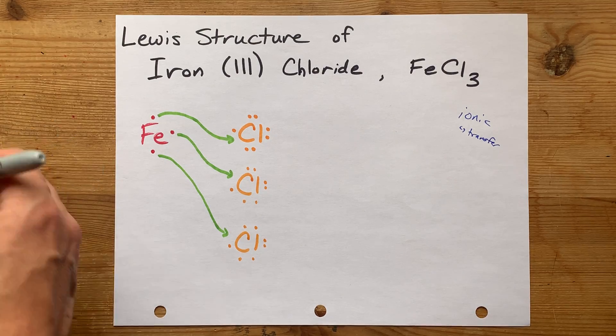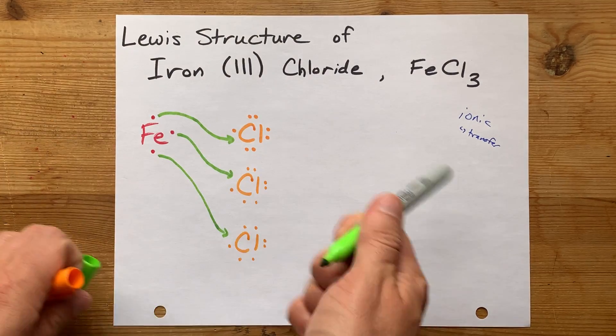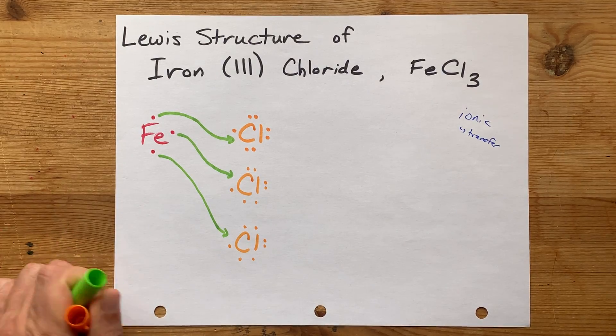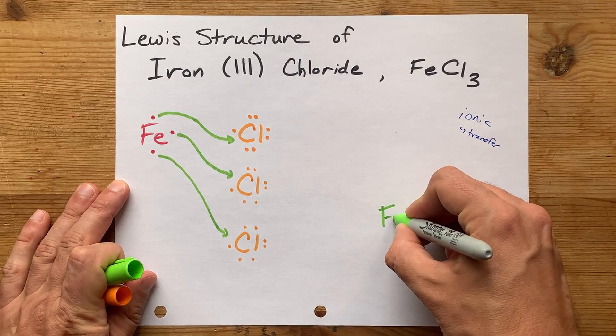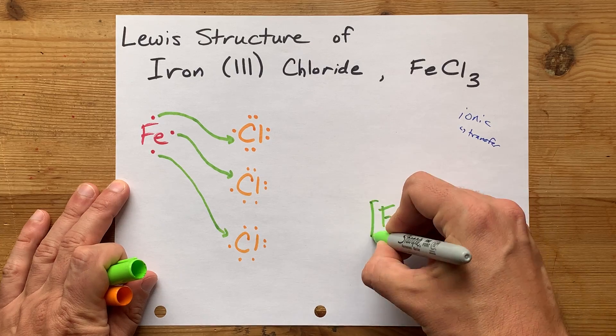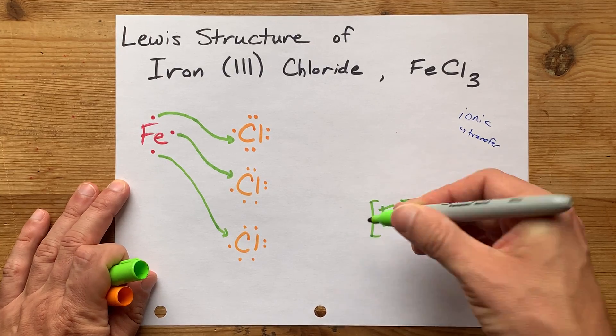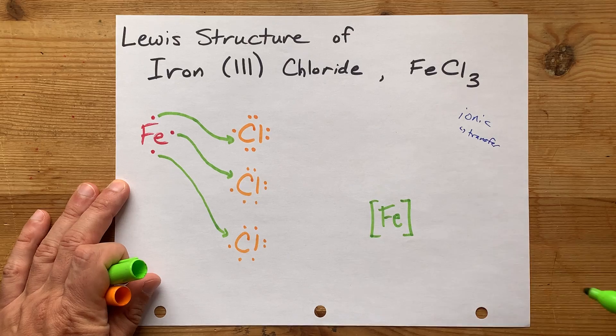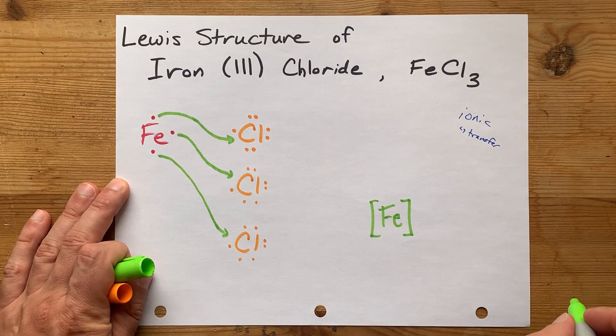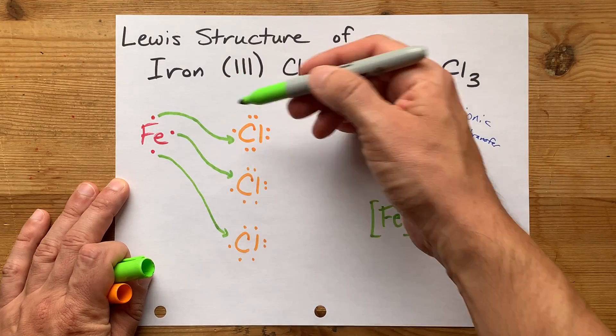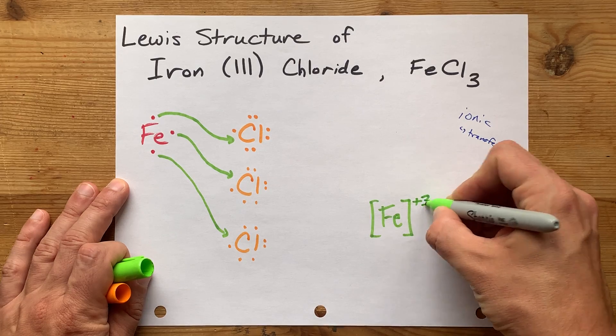Now, we're not done. We still need to do the actual final Lewis structure. This is just showing the transfer of electrons. You have Fe, iron, and I don't want you to put any dots around it because it gave away all its valence shell electrons. But it lost 3 negatives. That gives it a charge of plus 3.